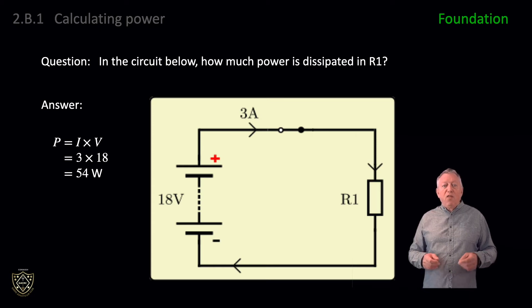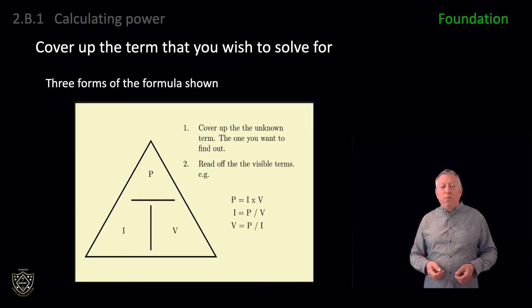However, if we are given the voltage and power and asked to solve for the current, we will need to rearrange the formula such that the unknown quantity is the subject of the formula—on the left-hand side of the equal sign—or we can use the triangle to perform a transposition. To use the triangle, just cover up the term that you wish to solve for and write down what's left. In this way you get three forms of the formula shown: the first with power P as the subject, the second with current I, and the third with voltage V.